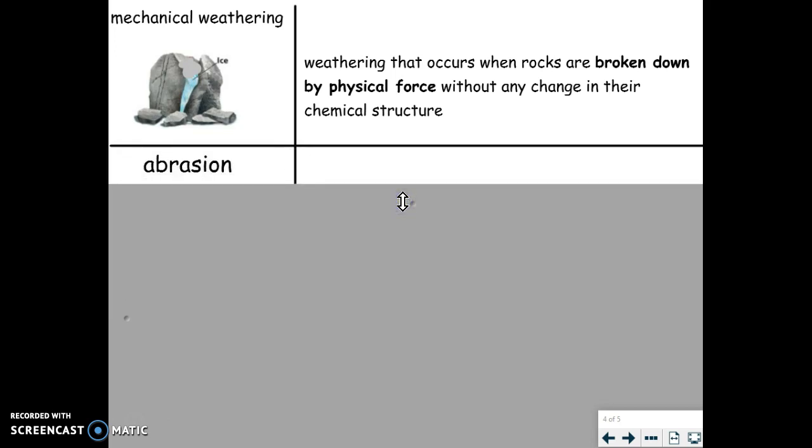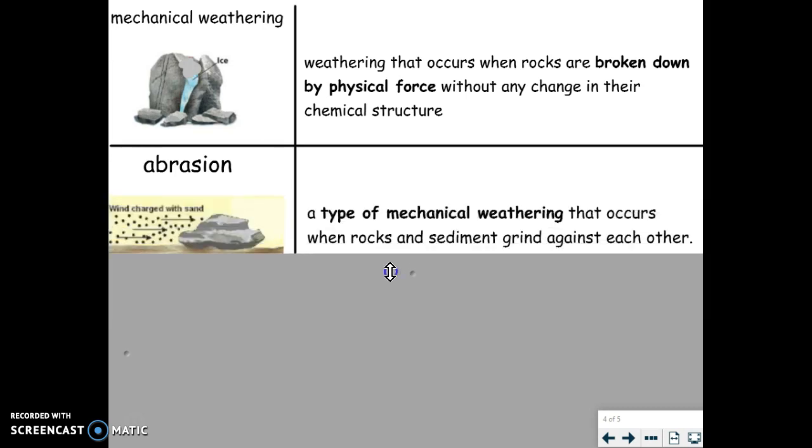Abrasion: a type of mechanical weathering that occurs when rocks and sediment grind against each other. Notice in the illustration that wind can often contain little bits of rock or sand. If you have ever been outside when this has happened, on the playground or at the beach, you know what it feels like. This is a type of mechanical weathering because it is a physical force that is shaping the rocks around you. There is no difference in the atomic structure of the rocks, so therefore they are the same type of rock but broken down into smaller pieces. When you are ready, you can go on. If you are not ready, please pause the video here.